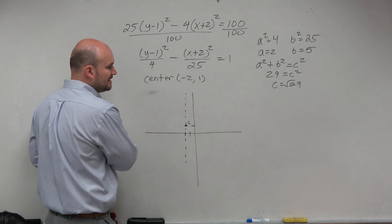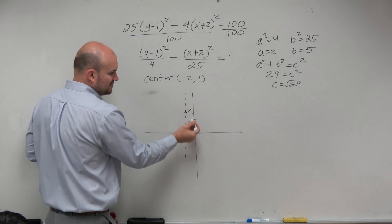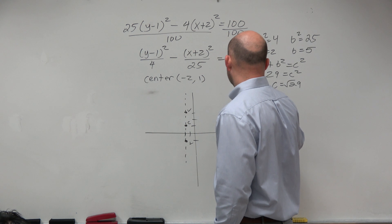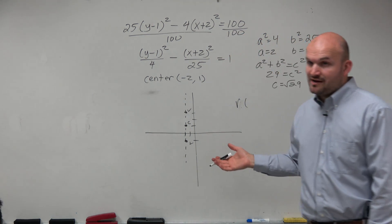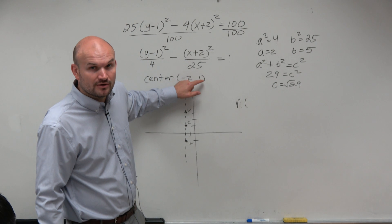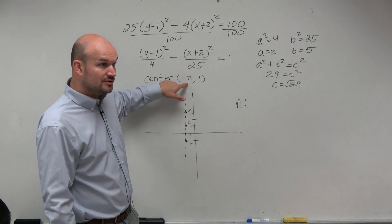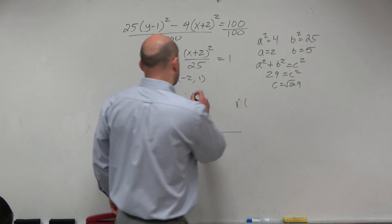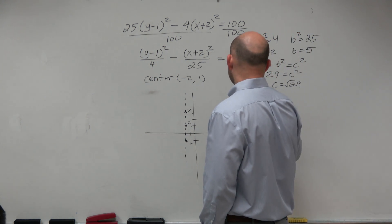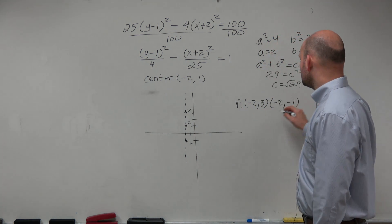I have my center, which is my h,k. Now let's identify the vertices. The vertices are a distance of a from the center. So it's up 2 for one vertex and down 2 for my other vertex. Are you adding 2 to the h-coordinate or to the k-coordinate? If you want to go up and down, you add 2 to 1 — the k value. So we're doing negative 2 comma 1 plus or minus 2. That gives us negative 2 comma 3, and negative 2 comma negative 1.